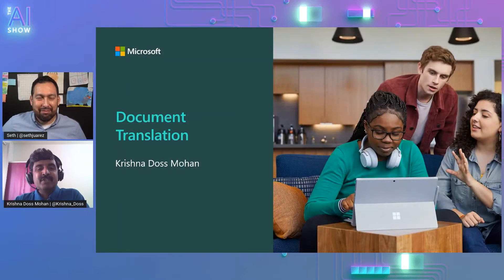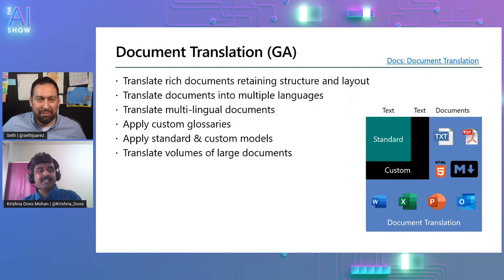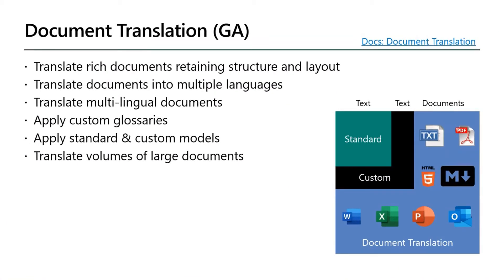So let's talk about document translation. What is it? What's new since we last chatted? Before I jump to what's new, I would just like to introduce what we did at the Build conference. We announced general availability of the document translation feature, which translates documents at scale. Document translation enables users to translate volumes of large documents in a variety of file formats easily into single or multiple target languages, preserving the layout and structure as in the original file format. Do you have documents in mixed language? No problem. Document translation would automatically detect the languages in the document and get it translated for you. You could also translate a single document into multiple languages in a single request.